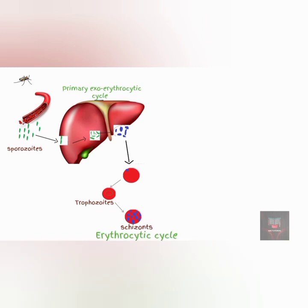These infected red blood cells then rupture and release a new set of merozoites into the circulation. The released merozoites can then infect more red blood cells, thus leading to a cycle of red blood cell infection and destruction.